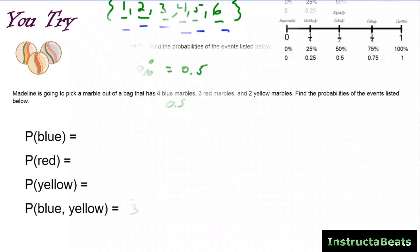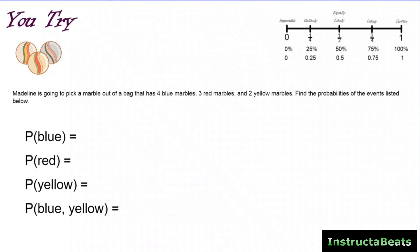Let's try a you-try problem. Madeline is going to pick a marble out of a bag that has four blue marbles, three red marbles, and two yellow marbles. Find the probabilities of the events listed below. Go ahead and pause the video, do this work on your notes, and then push play to check your understanding.